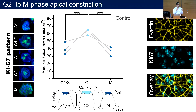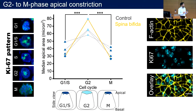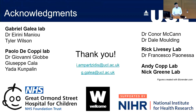Overall, we've translated in vivo findings of the neuroepithelium into an in vitro system that is human-based for the first time. We've also applied this system using iPSCs derived from an individual affected by spina bifida, and we've been able to validate our model by observing higher-magnitude G2 dilation in the spina bifida cell line. This validates our system and provides greater insight for further experiments. Thank you very much for your attention; I'd be happy to answer any questions.